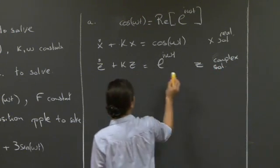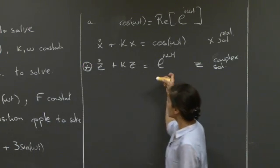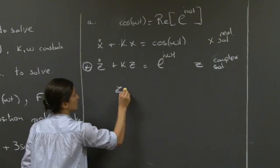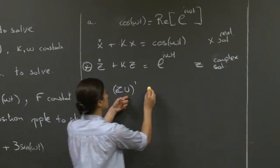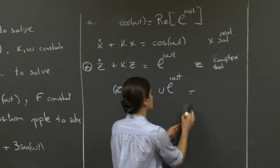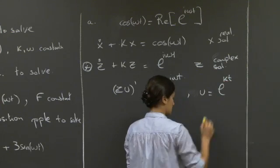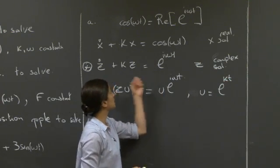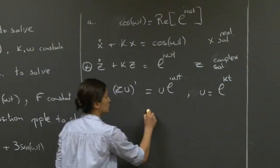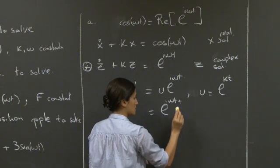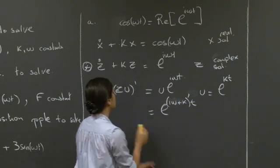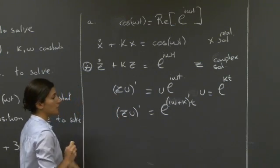From this point — we'll label this equation star — we go back to the integrating factor technique learned in class. We rewrite the right-hand side introducing a new function u, seeking a u that recovers this equation. From previous recitations, the u we need to pick is simply e to the kt. From this, we're back to i omega plus k, the whole thing, times t on the right-hand side, giving us z times u-prime that we just need to integrate on both sides.